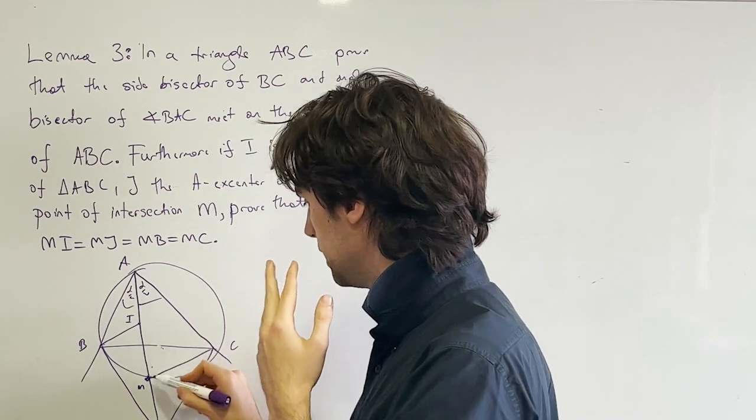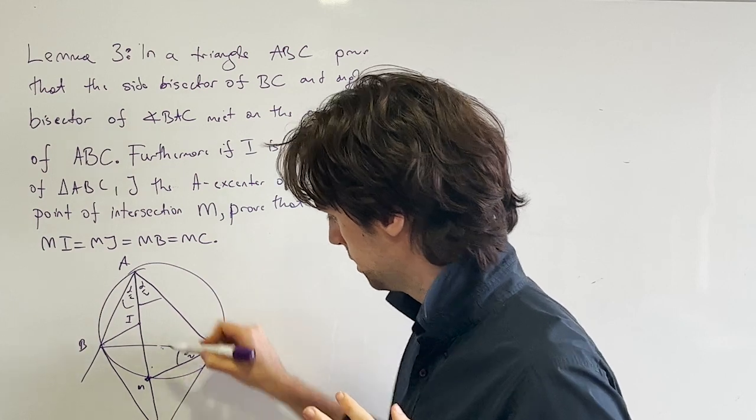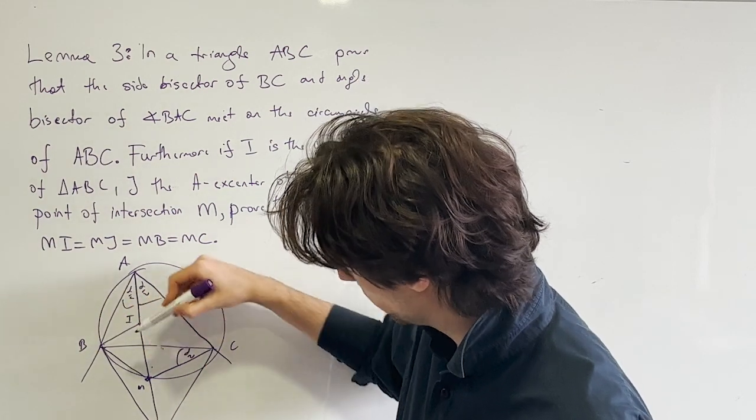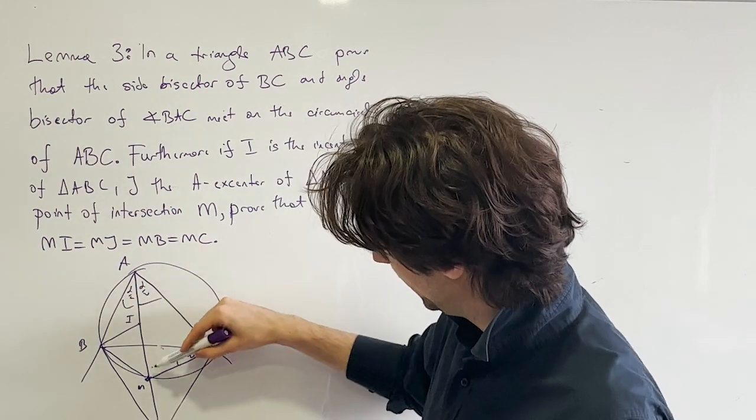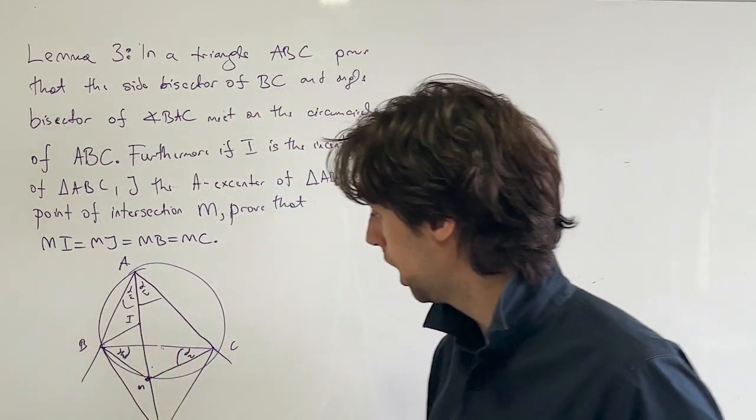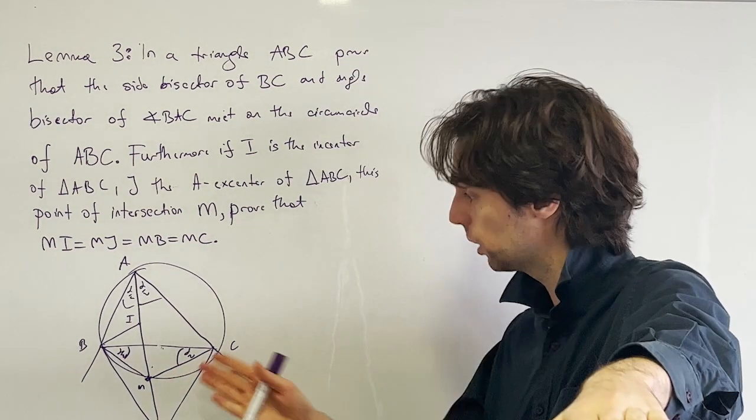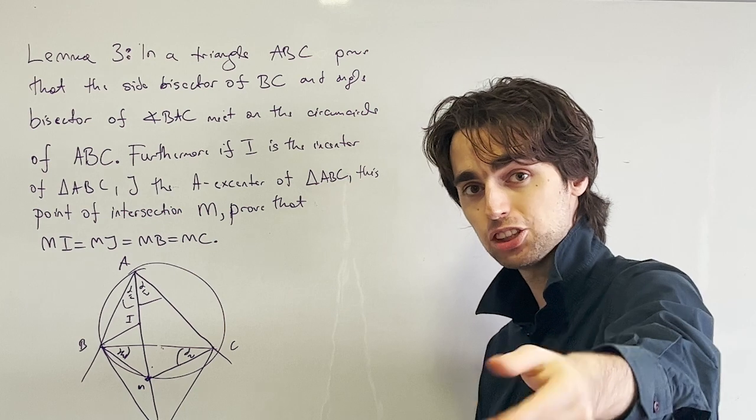So let's see, what do we have? We have the angle MCB equals MAB equals alpha half. And this angle right here MBC equals MAC, also alpha half. And now we are sort of done, right? Here's why. I'm going to give you three minutes to figure out why we're done.